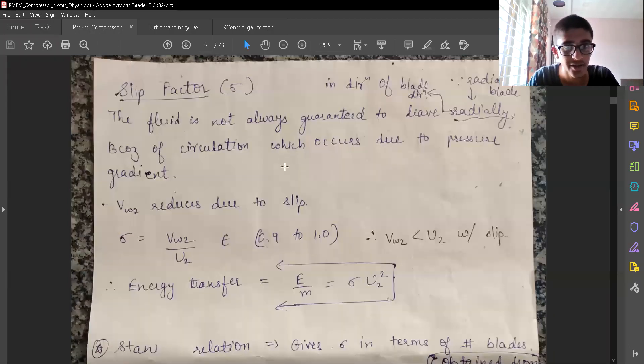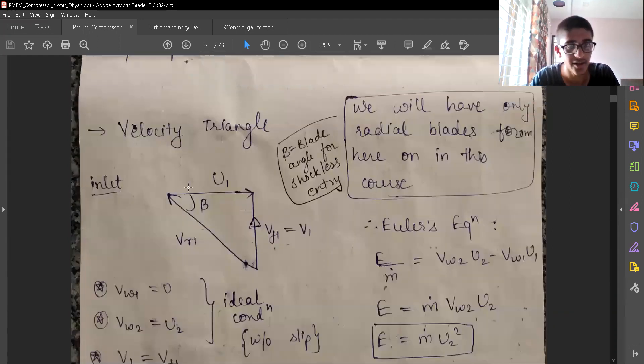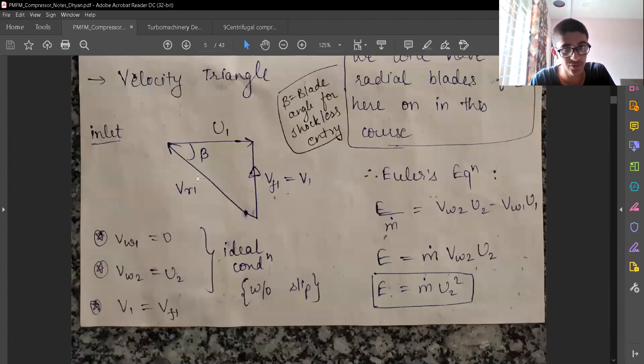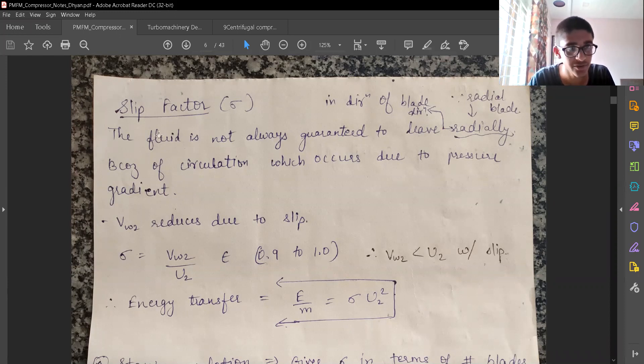In the earlier video, we have seen that the inlet velocity triangle and outlet velocity triangle and the actual and ideal velocity triangle. There are some reasons, there are some energy losses which are happening and the factors which are leading to energy loss are described in this video.